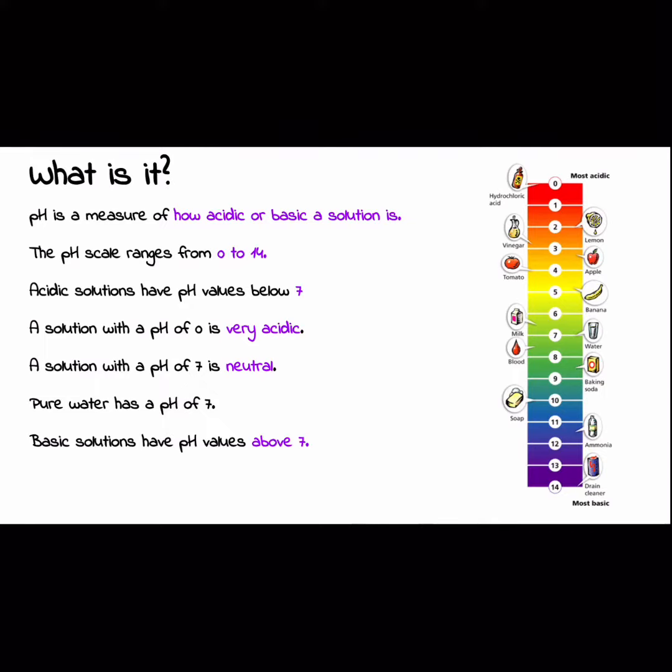Acidic solutions have pH values below 7. If you look at the picture to the right, 7 is in the middle, and if you go up on that scale to 0, so green to red, those are all very acidic solutions. Hydrochloric acid, that's something you should have heard before in my class, and that is something that's super acidic.